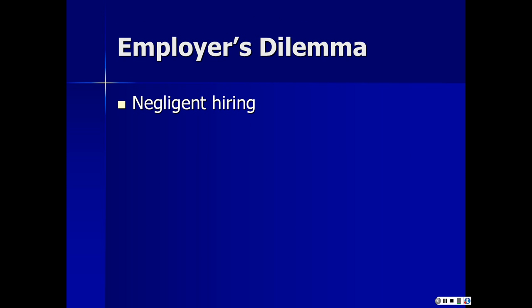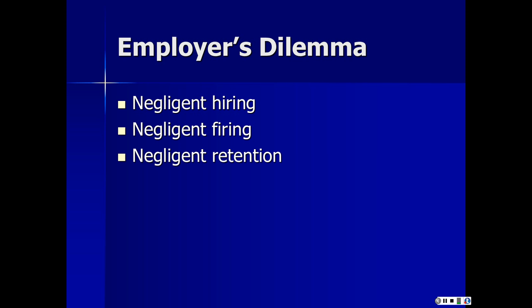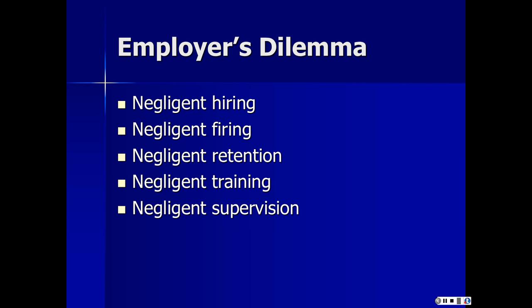What is the employer's dilemma? The employer can find itself liable for a number of actions. Negligent hiring is when an employer hires someone it should not hire. Negligent firing is when you fire someone you shouldn't fire. Negligent retention is when you don't fire somebody you should fire. Negligent training is when you hire an employee and don't train them how to properly and safely do their job. And then negligent supervision — you hire someone and don't supervise how they do the job, and someone gets hurt or someone's property is damaged.